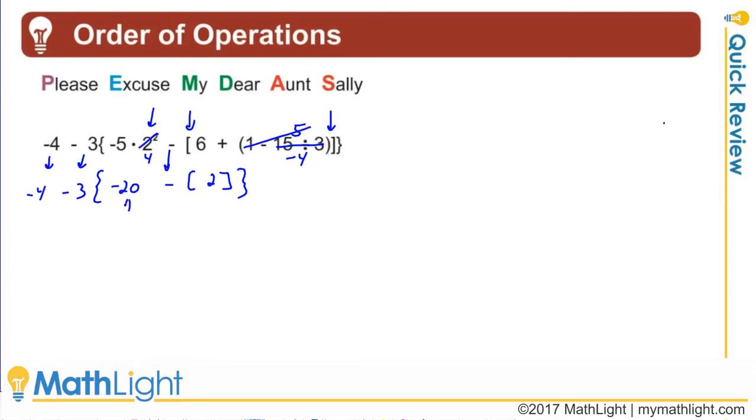All right, I have 20 negatives and 2 more negatives. So my brace is a negative 22. Still have the negative 3 out in front and the negative 4 out in front of that.